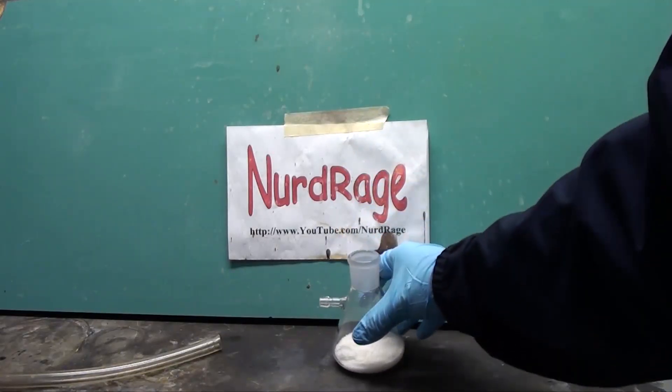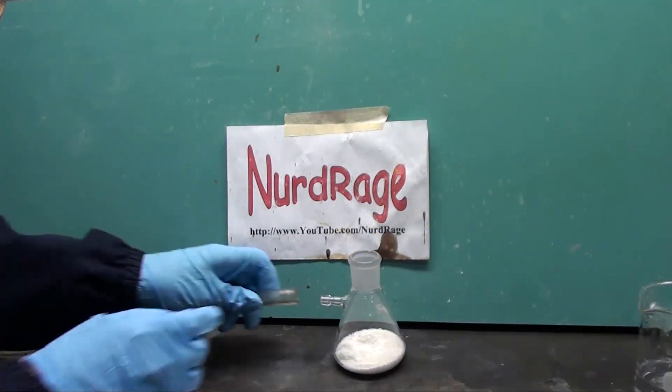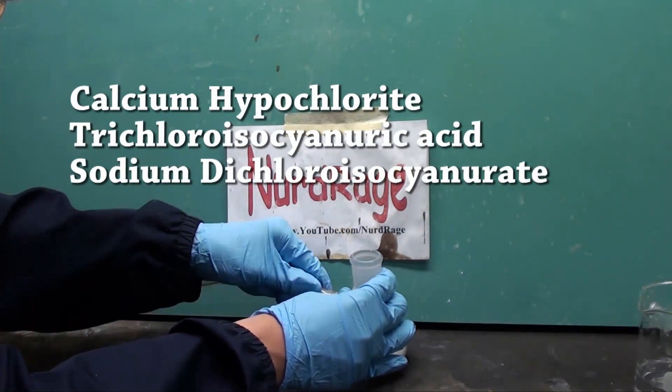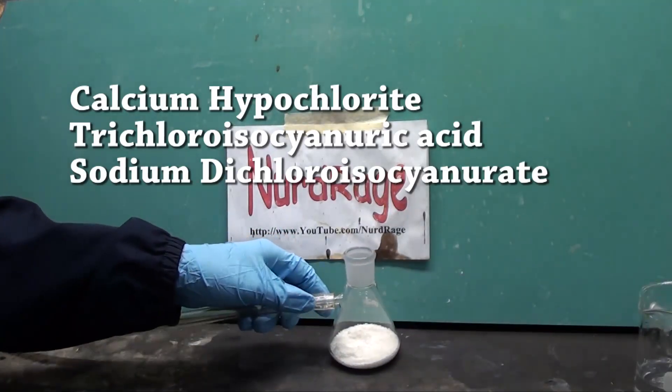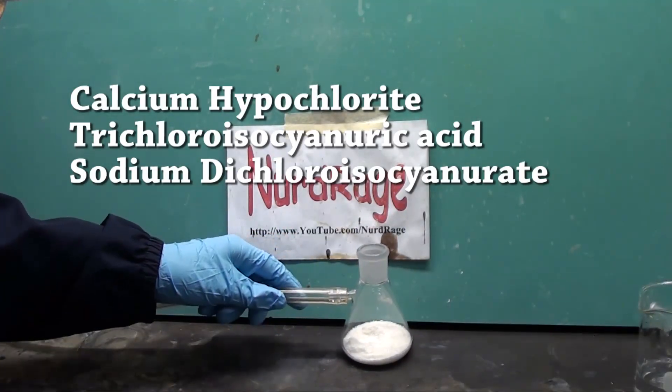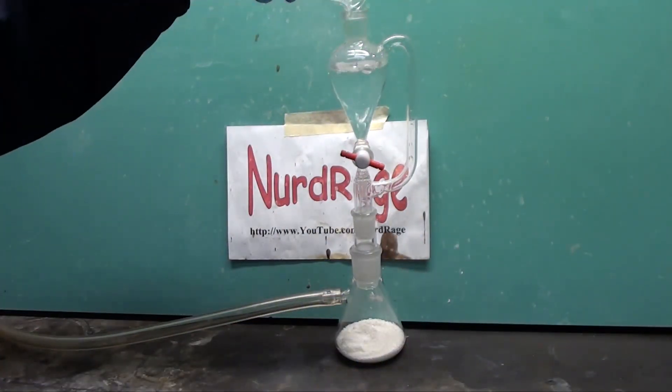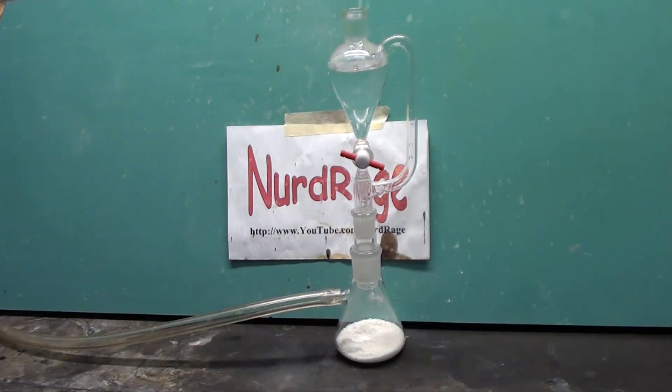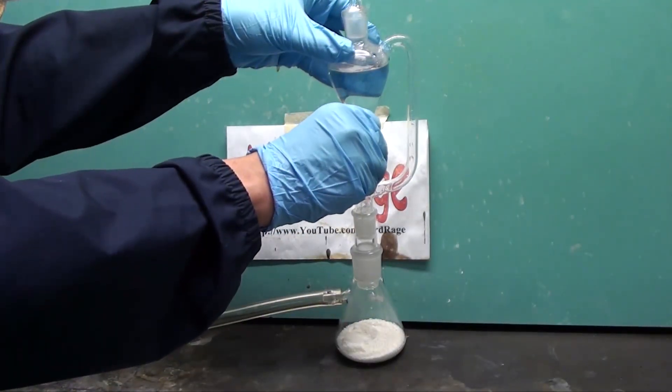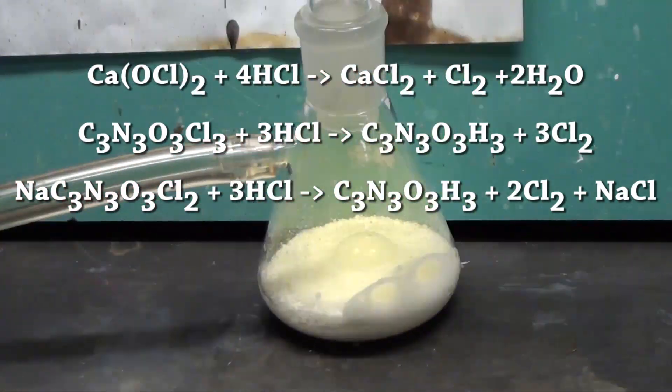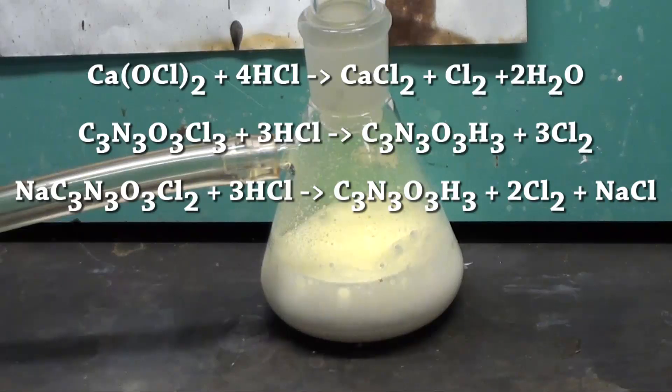This can either consist of calcium hypochlorite, trichloroisocyanuric acid or sodium dichloroisocyanurate. Using a pressure equalized dripping funnel add the appropriate mole equivalent of 6 molar hydrochloric acid. Four molar equivalents in the case of calcium hypochlorite, or 3 in the case of the isocyanuric acid versions.